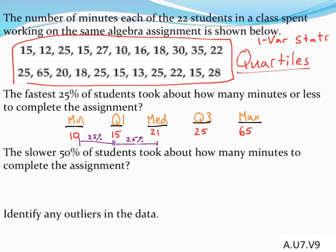The first question was: the fastest 25% of students took about how many minutes or less to complete the assignment? Well, the fastest 25% are going to occur in the bottom section. The fastest 25% of the numbers must be 15 minutes or less to complete that assignment based on our quartile information. That's the kind of thing they're looking for on these questions.